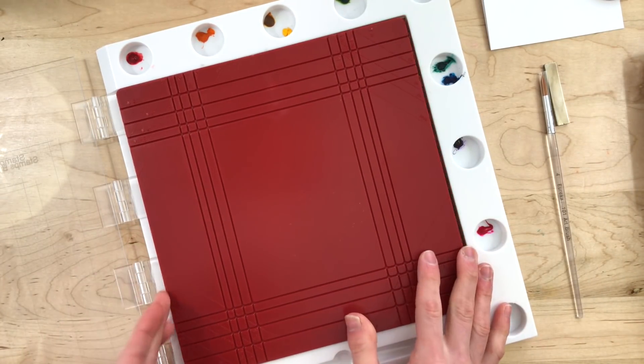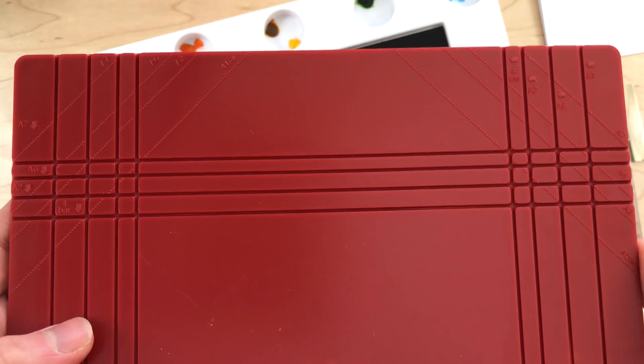This scoring board also has the envelope scoring lines on the backhand side. You can create different size envelopes depending on the size of your card.